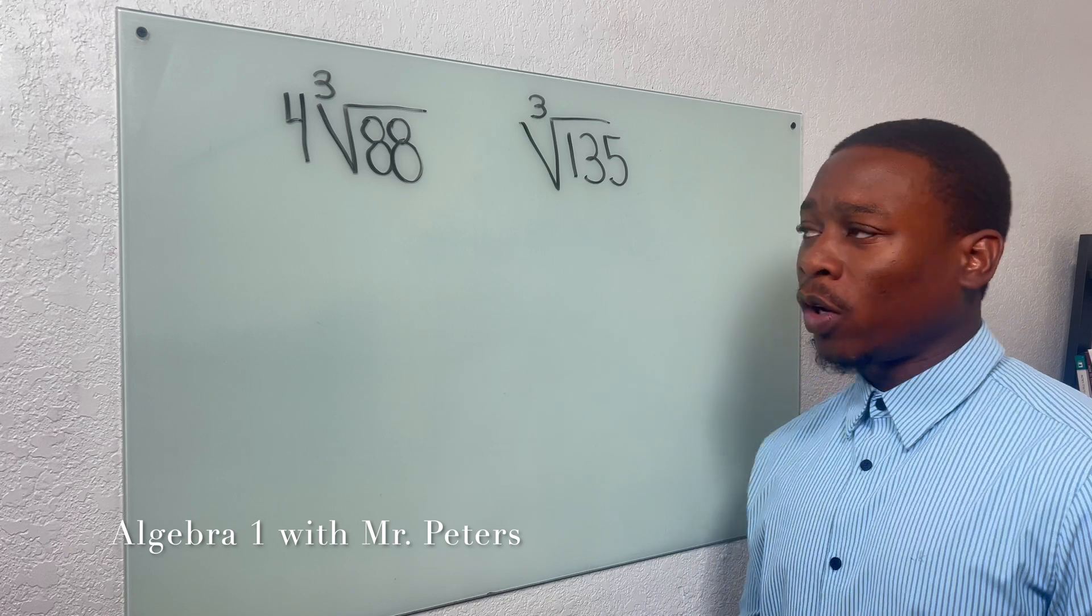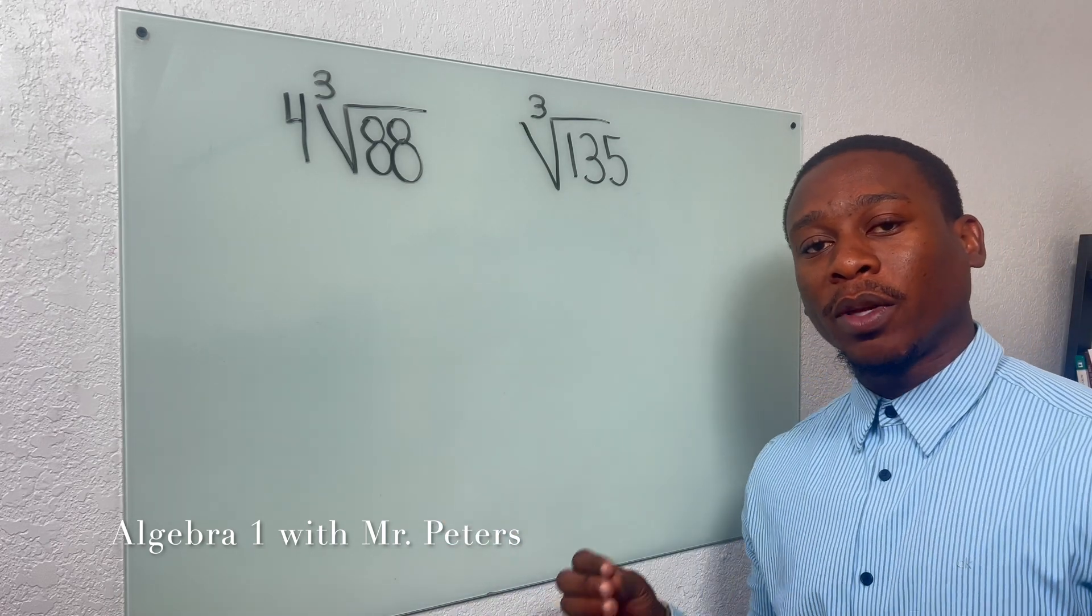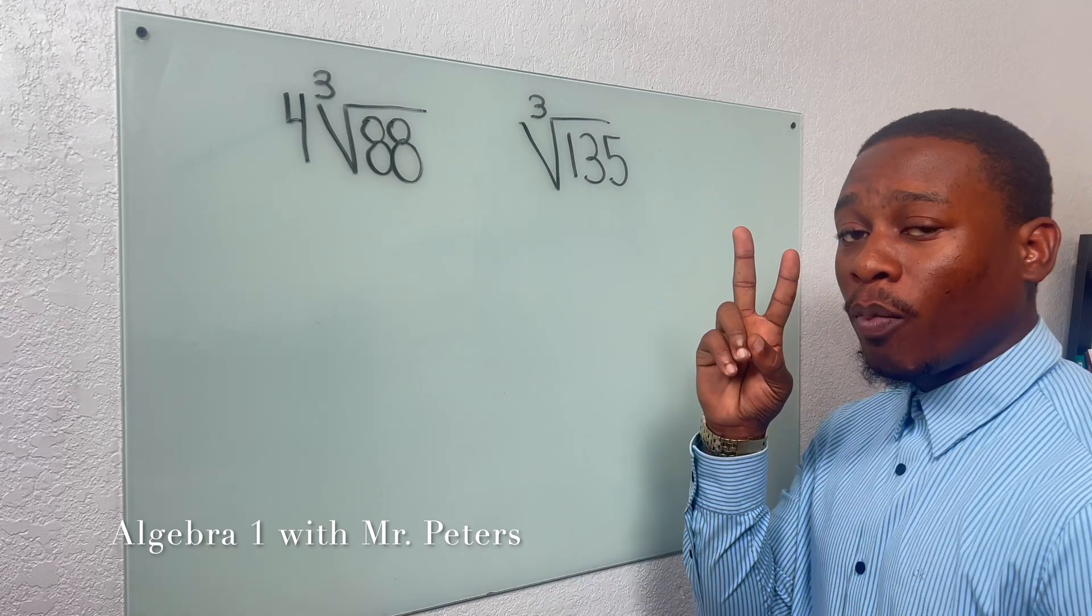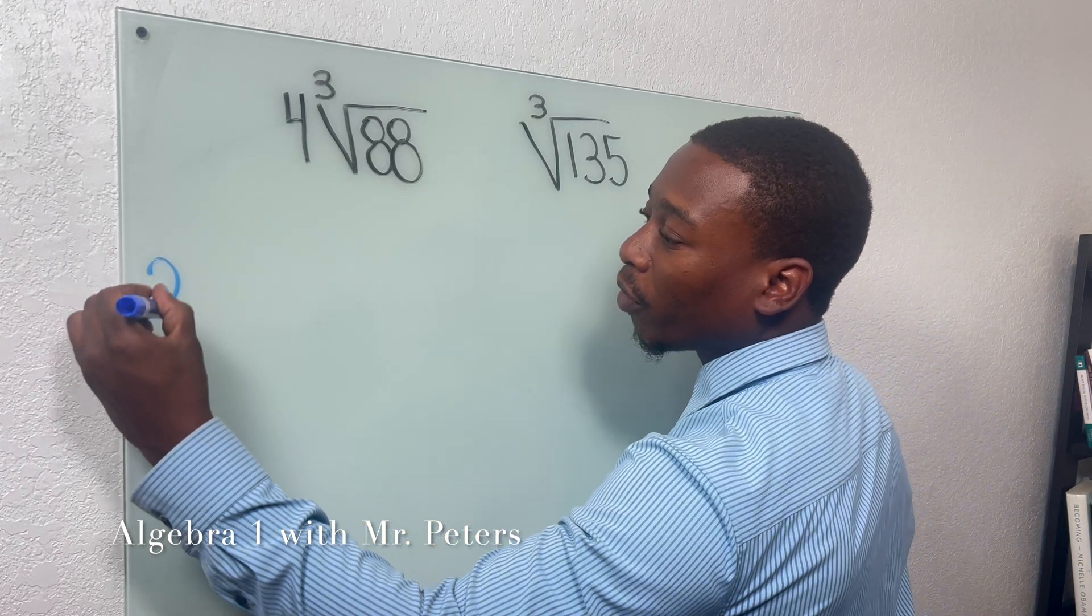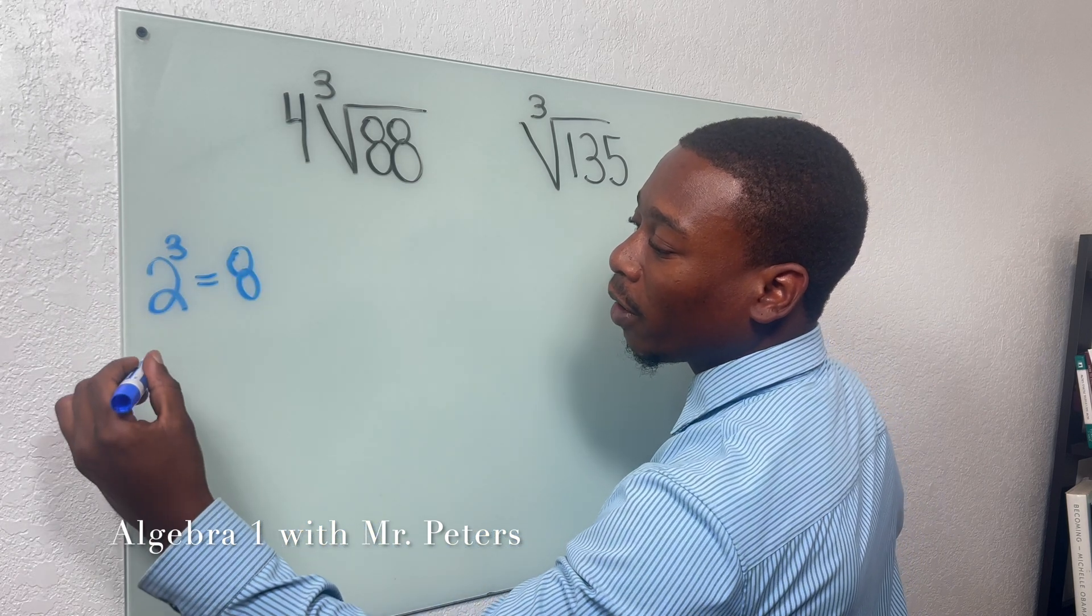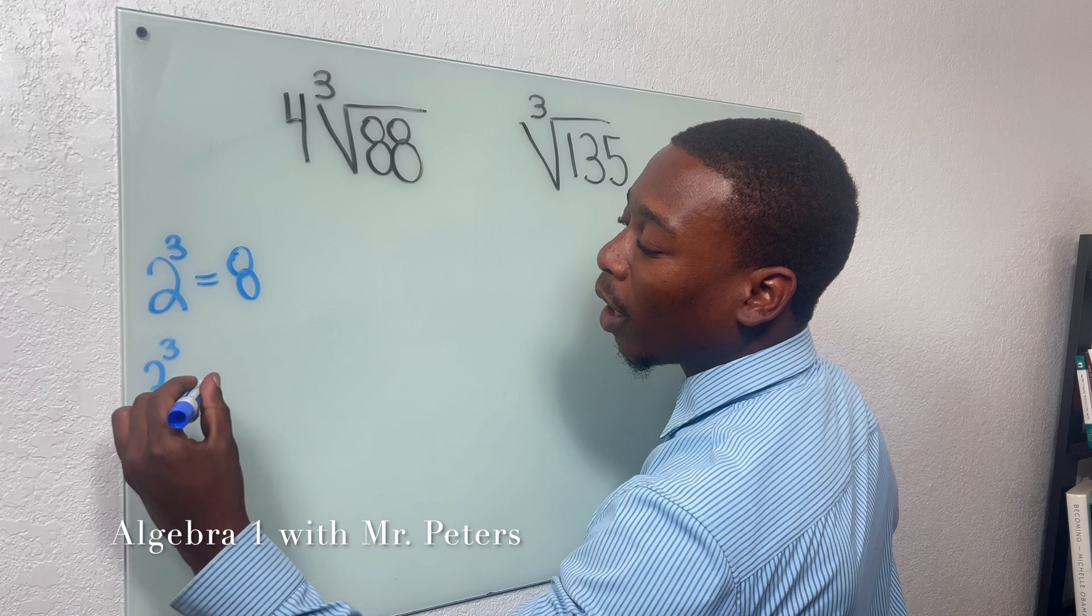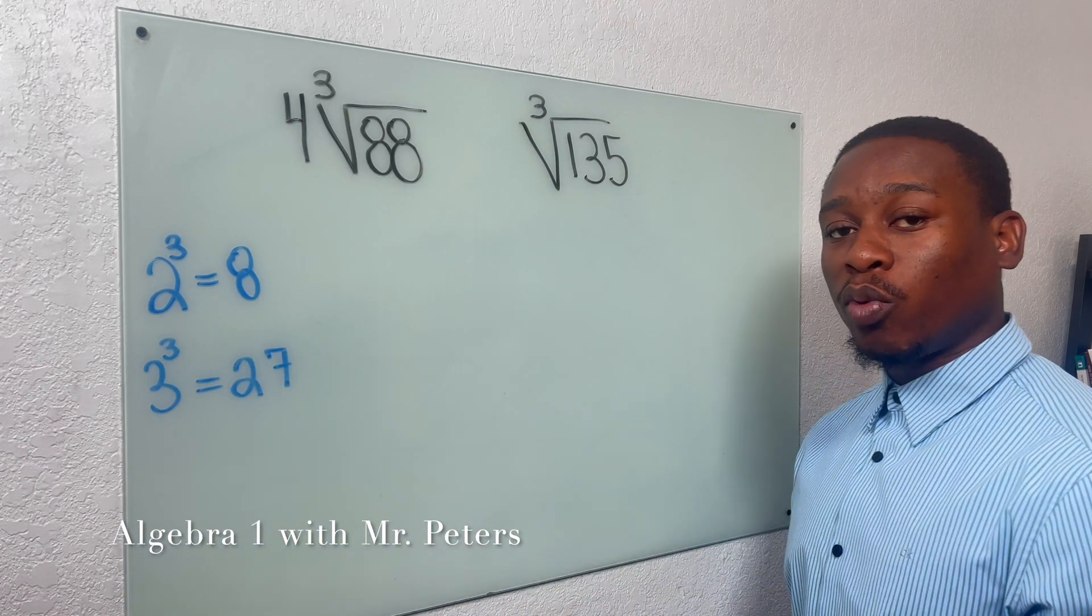And what we're going to do now is just review cube roots. Because sometimes this could be complicated for students. But if you can remember these two main cubes, we should be in very good shape. So 2 to the third power is equal to 8. And 3 to the third power is equal to 27.